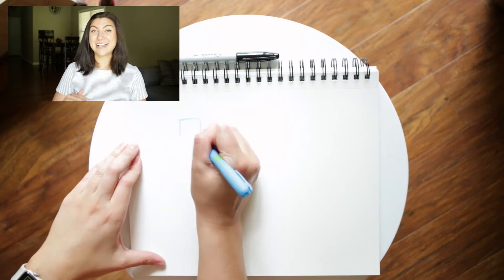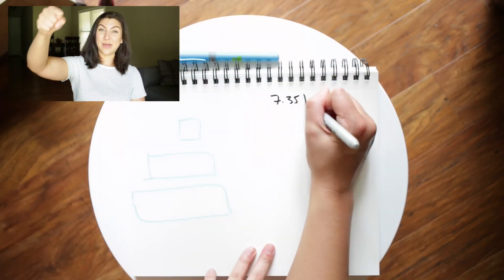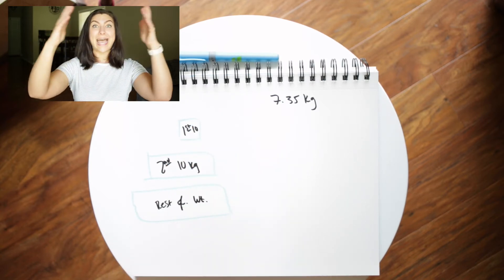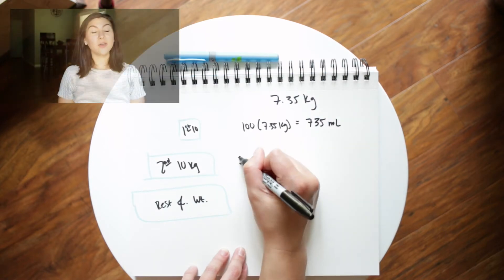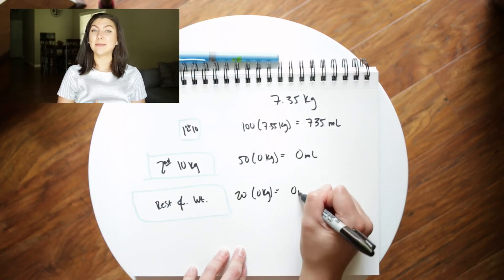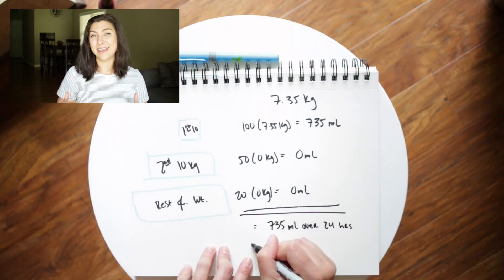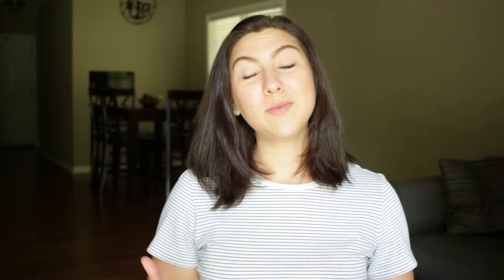Let's do another example. Let's pretend that our patient is 7.35 kilograms — under the 10-kilogram mark. So if we have that volume in our pitcher and we pour it into the top tier, there isn't enough volume for it to cascade and spill over into the second tier. All we would do is multiply that patient's weight times 100, because we don't have any extra weight to worry about in the other tiers.